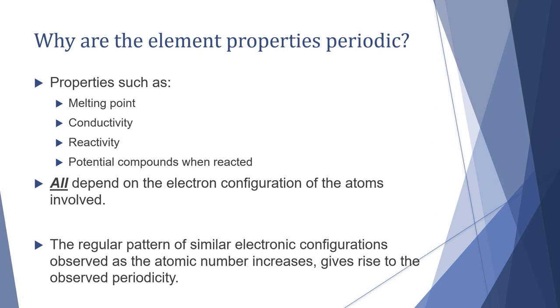So essentially as we move on from our understanding of the periodic table from year 10, we start to learn that a large number of the properties that we see in elements are periodic. This includes melting point, conductivity, reactivity, the way they react to form compounds - all of these depend on the electron configuration. So they exhibit the same kind of periodic trends as what we see in the periodic table.